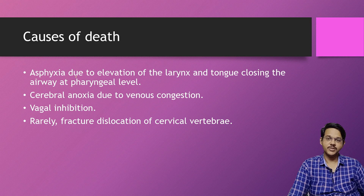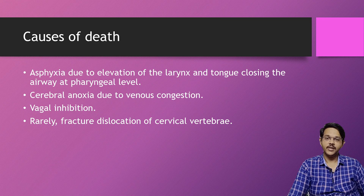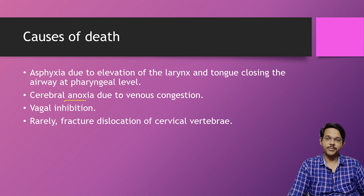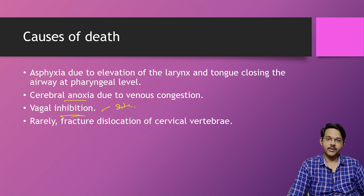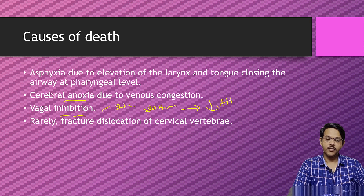The cause of death in strangulation: foremost is asphyxia, mainly because compression of the neck causes compression of the trachea and larynx, leading to stoppage of air supply to the lungs. Another cause is cerebral anoxia, caused by compression of venous return leading to venous congestion, which stops blood supply to the brain. Vagal inhibition is another cause, where stimulation of the vagus nerve reflexly causes decrease in heart rate or stoppage of the heart.